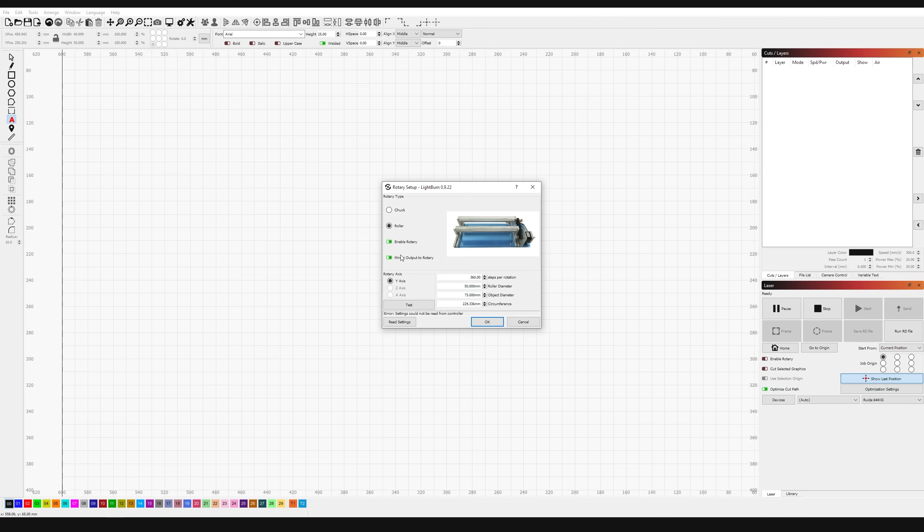I also mirrored the output but that will depend on how your axes are wired. My steps per rotation set by my driver is 6400. The rubber O-rings on my rollers have a diameter of 10.5mm and my bean can has a diameter of 73mm. This calculates the circumference to 229mm.